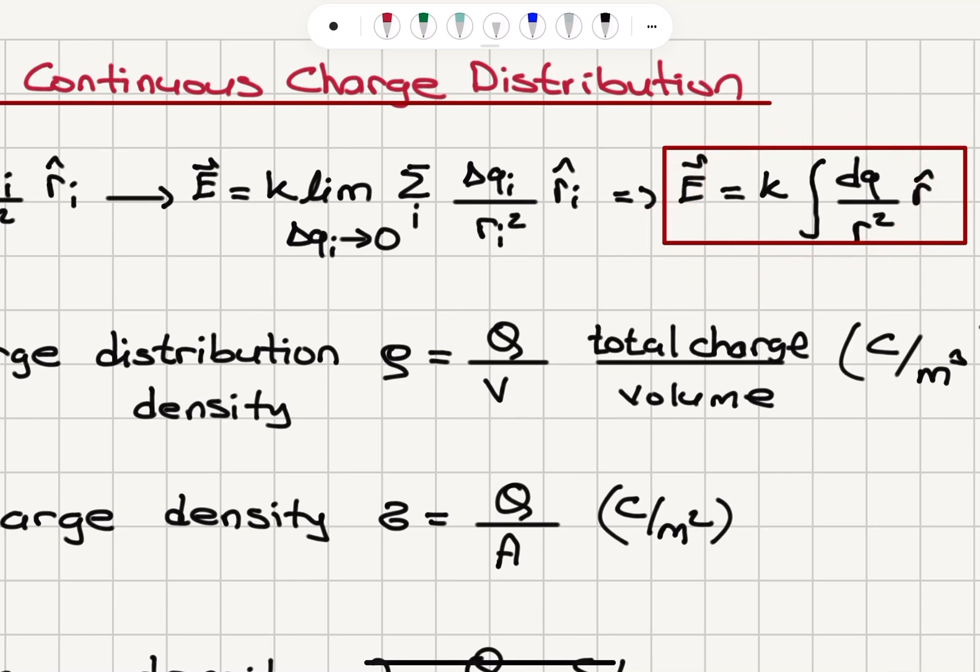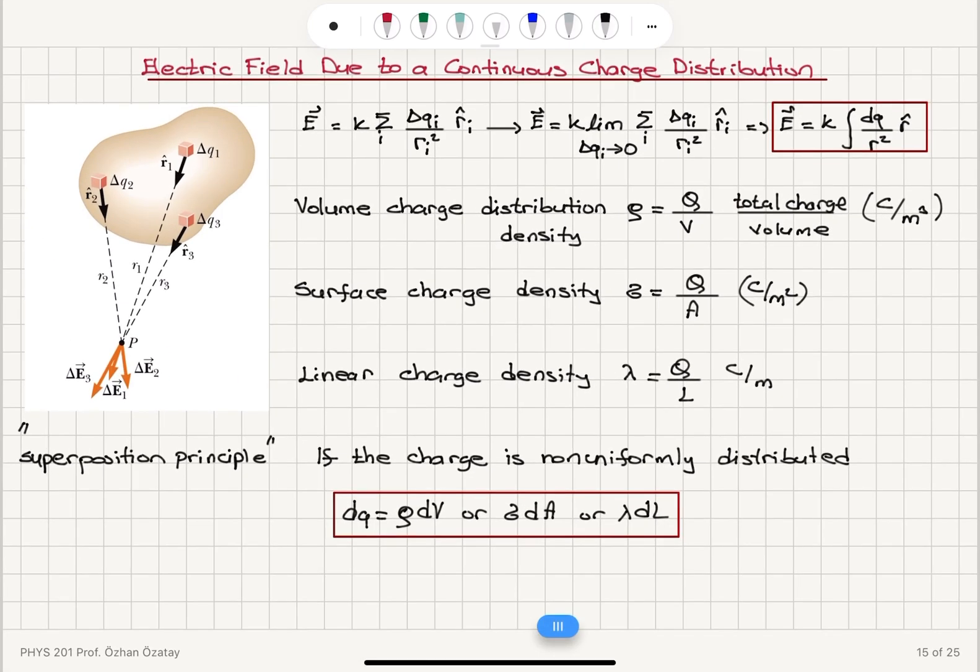DQ over R square R hat. So this will be our generalized version of the electric field due to a continuous charge distribution.